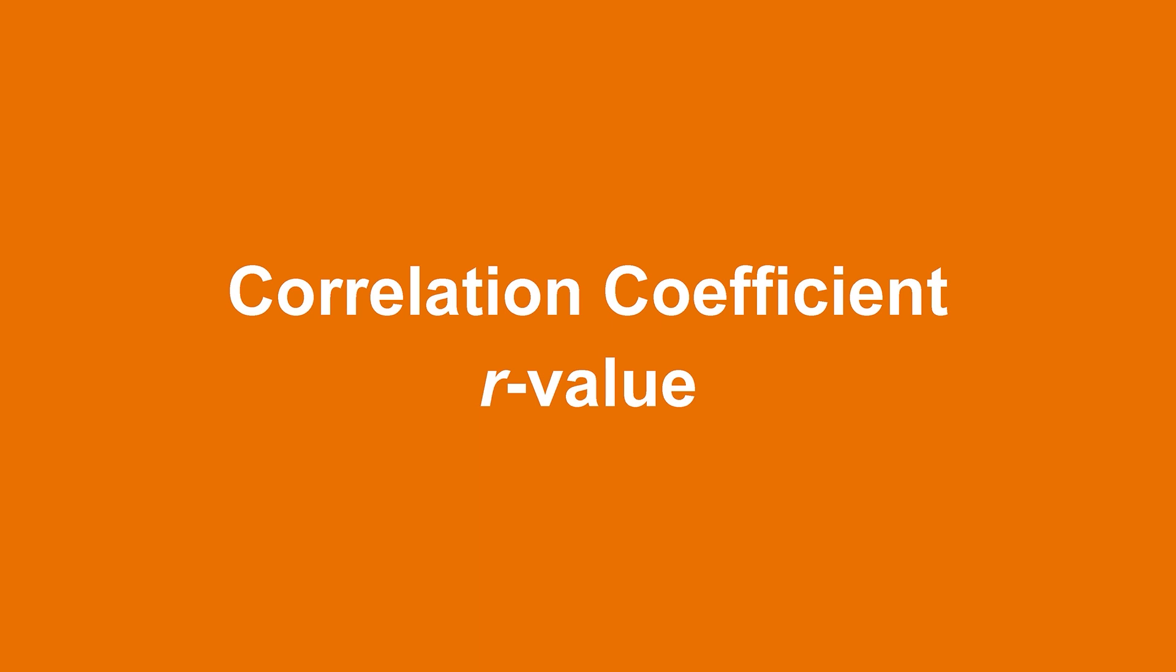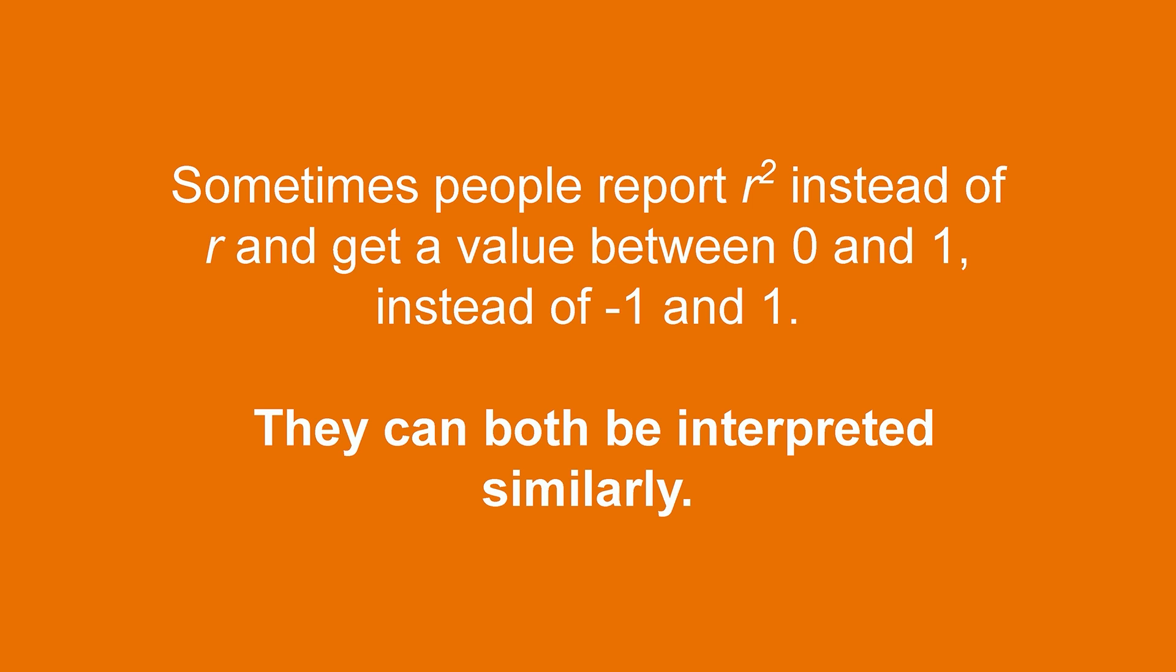On the other hand, if the r-value is closer to 0, it means that the data is not very correlated, and our linear model won't be a reliable predictor of new data. Most of the time, an r-value more than 0.6 or 0.7 away from 0 means that you have a pretty